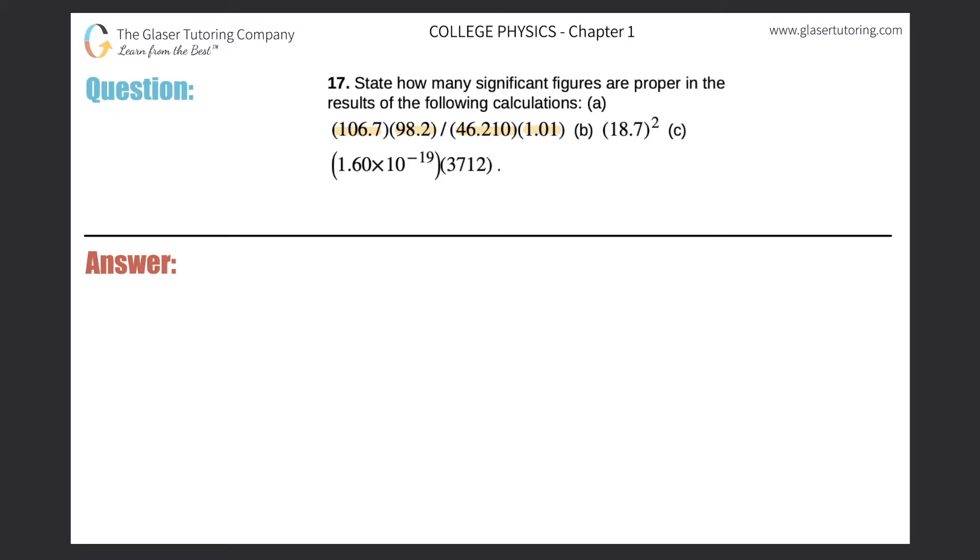Let's take a look at A first. We realize that all the operations here in this calculation deal with multiplication and division. That means our answer will have the least number of significant figures, or it will match the number of significant figures of the number that had the least in the calculation.